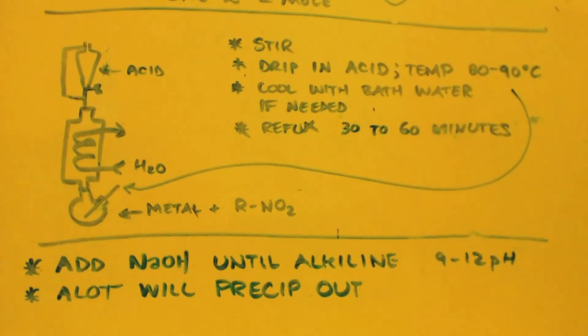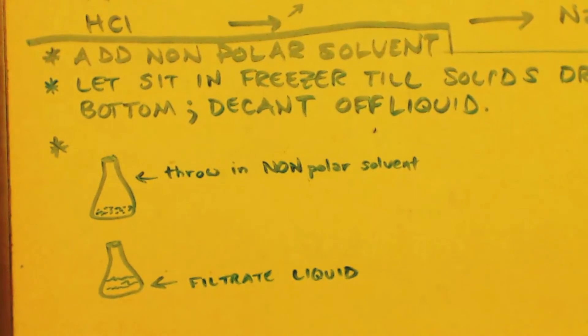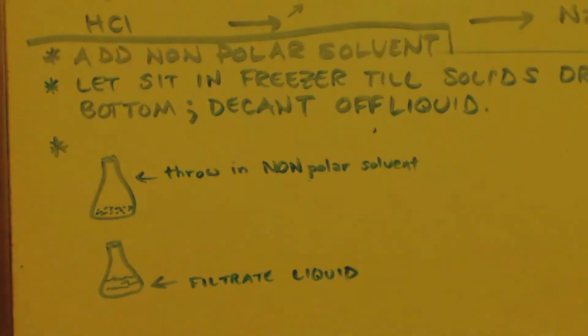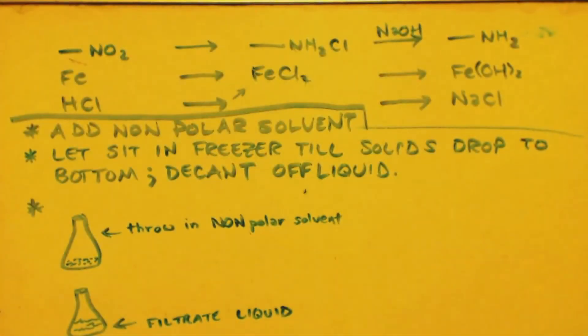Now, a lot of stuff is going to precip out. Now you're adding this sodium hydroxide little by little and then checking the pH until it gets to 9 to 12. If it's 14, that's good too. Whatever. Just so it's alkaline. You want to dissolve that sodium hydroxide in some water first. Dissolve it all up and then add it little bit by little bit.